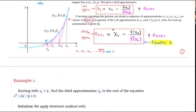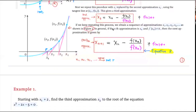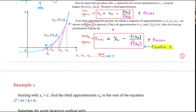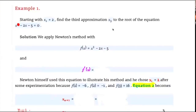Let's look at the first example: starting with x₁ = 2, find the third approximation x₃ to the root of the equation x³ − 2x − 5 = 0. This is a degree-3 equation — we do have a formula but it is very complicated. We're going to apply Newton's Method to approximate the root, meaning the real solution of this equation.